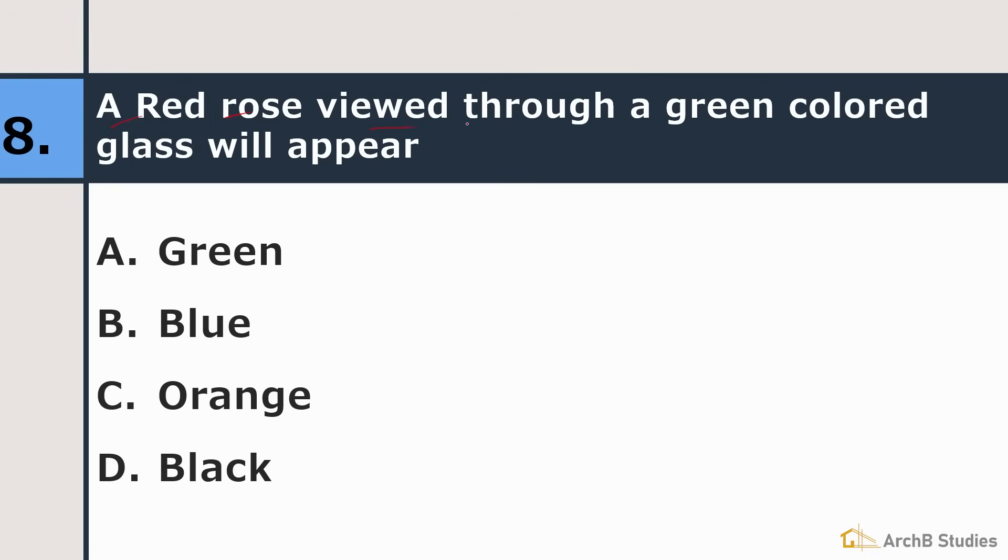A red rose viewed through a green colored glass will appear green, blue, orange or black. Right answer is black. Why? Because when you mix red color with green color, you get black color.